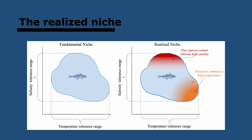Since there is almost always competition, a species is normally excluded from parts of its fundamental niche. The actual extent of the potential range that it occupies is called its realized niche. For example, at this range of salinity, prey species cannot tolerate it, and parasites are common at higher temperatures, meaning they are excluded by competition. Where the fundamental niches of two species overlap, one species is expected to exclude the other from part of its range. One option is that one gets completely excluded, or they both restrict each other to a part of the fundamental niche — so they each develop a realized niche.